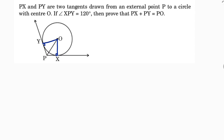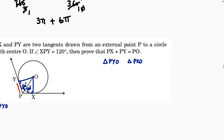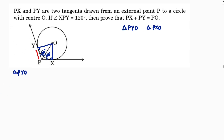Both angles are 90 degrees. So triangle PYO and triangle PXO are congruent. By CPCT, the angles at P in both triangles are equal, so both are 60 degrees. Now I need the relationship between Py and Po from triangle PYO.